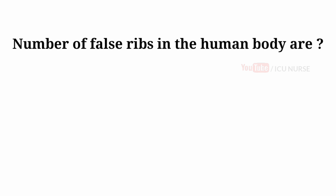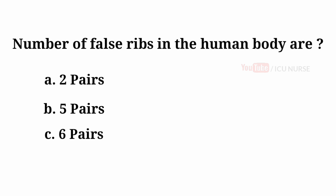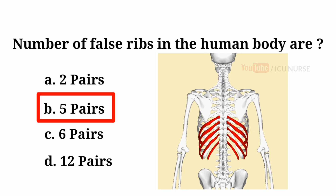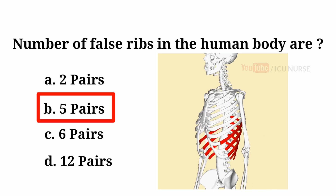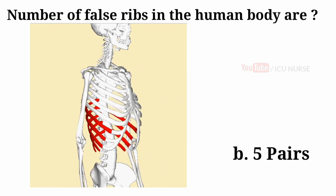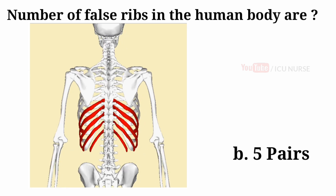Number of false ribs in the human body are: A. 2 pairs, B. 5 pairs, C. 6 pairs, D. 12 pairs. And the answer is B. 5 pairs. The human body has 5 pairs of false ribs.